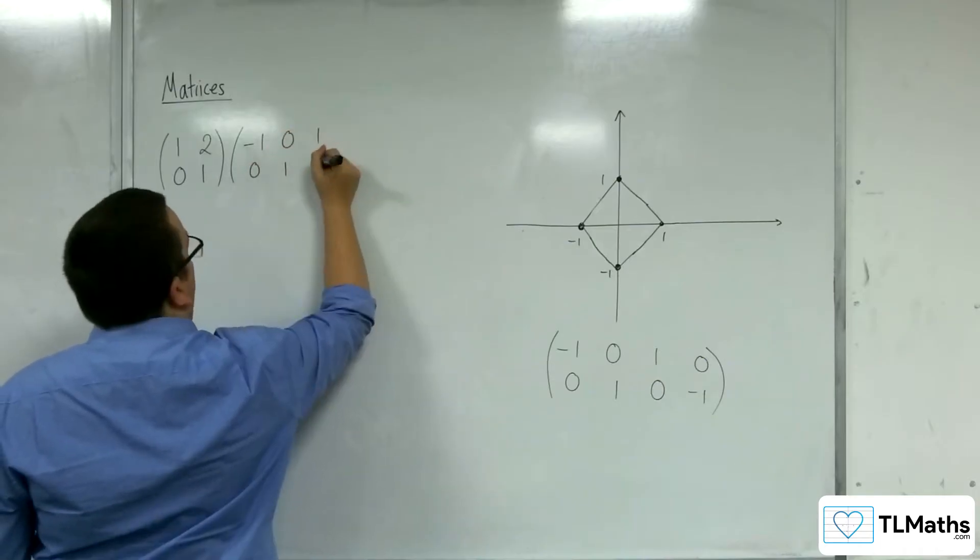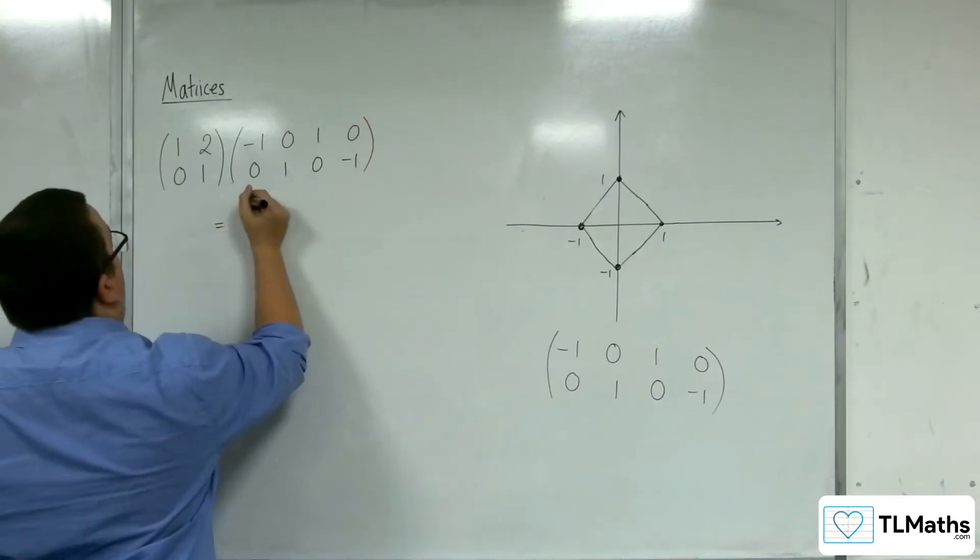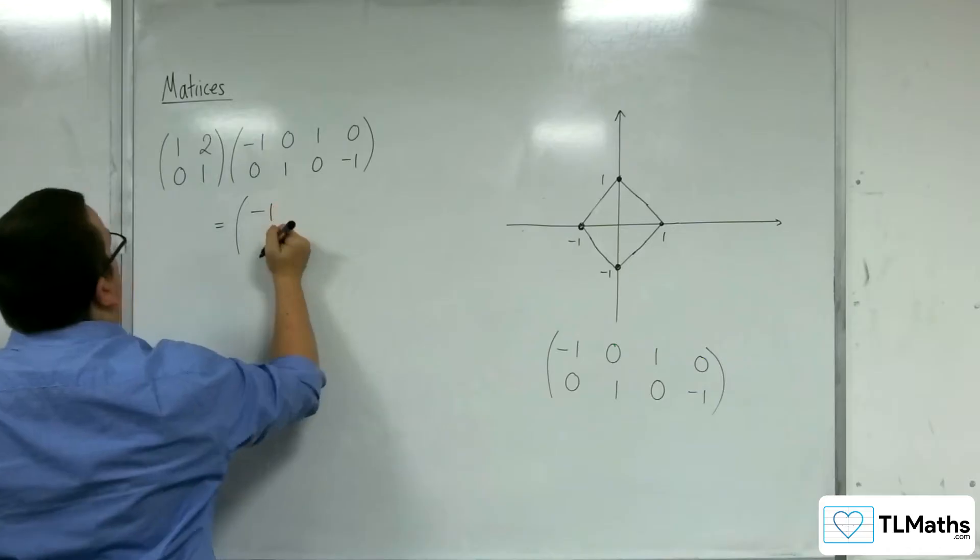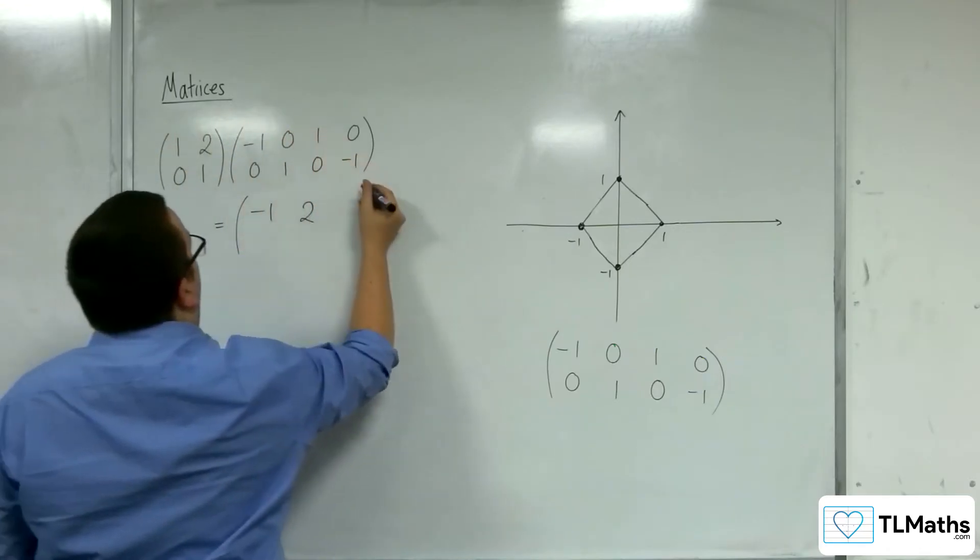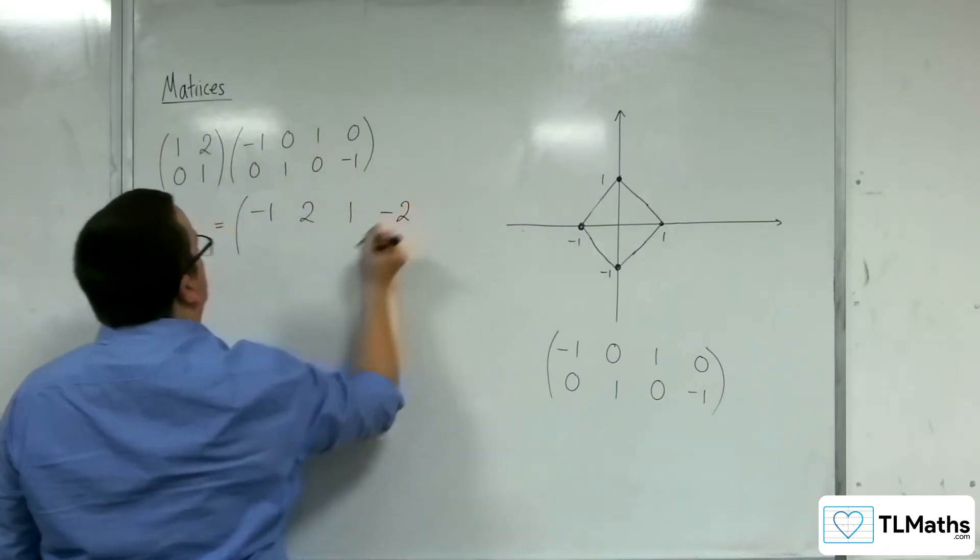So we're going to get 1, 2 multiplying with minus 1, 0, so negative 1, 1, 2 multiplying with 0, 1, so 2, 1, 2 multiplying with 1, 0, so 1, and 1, 2 multiplying with 0, minus 1, which is negative 2.